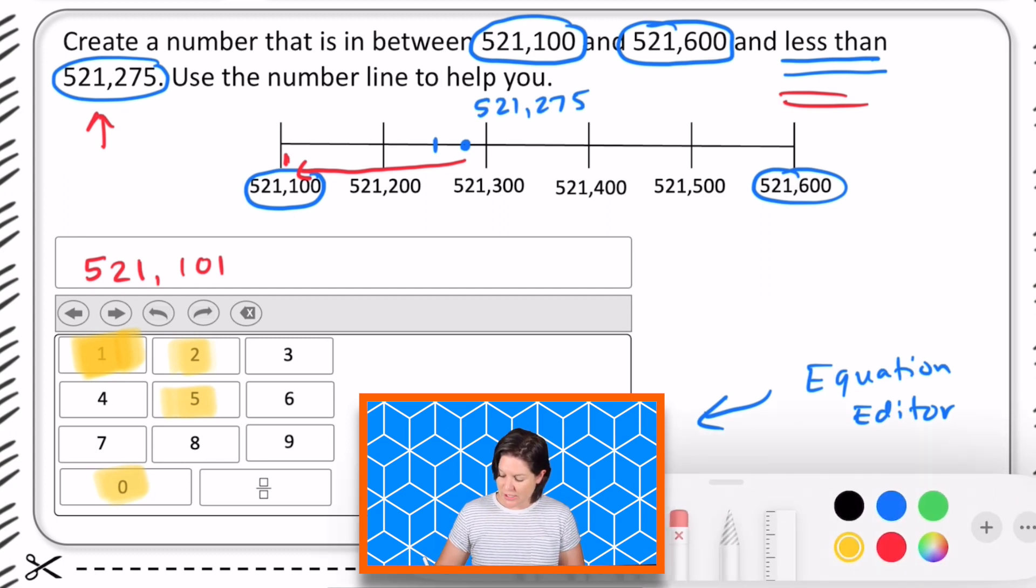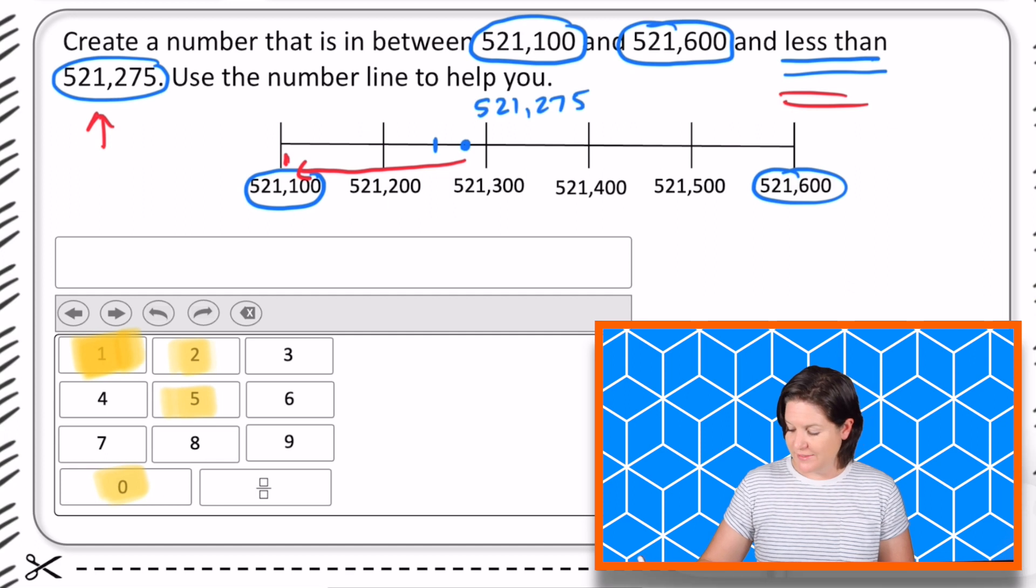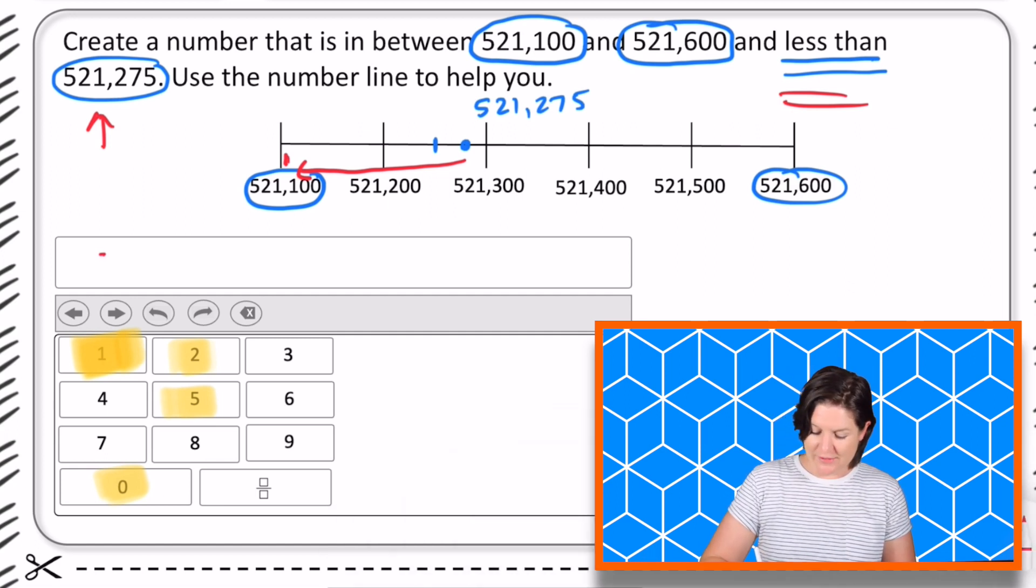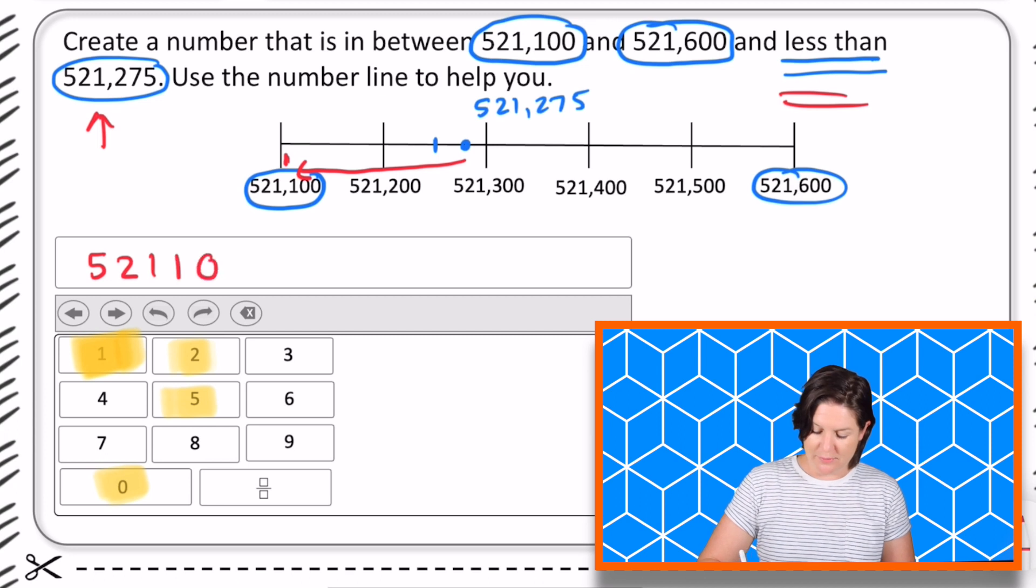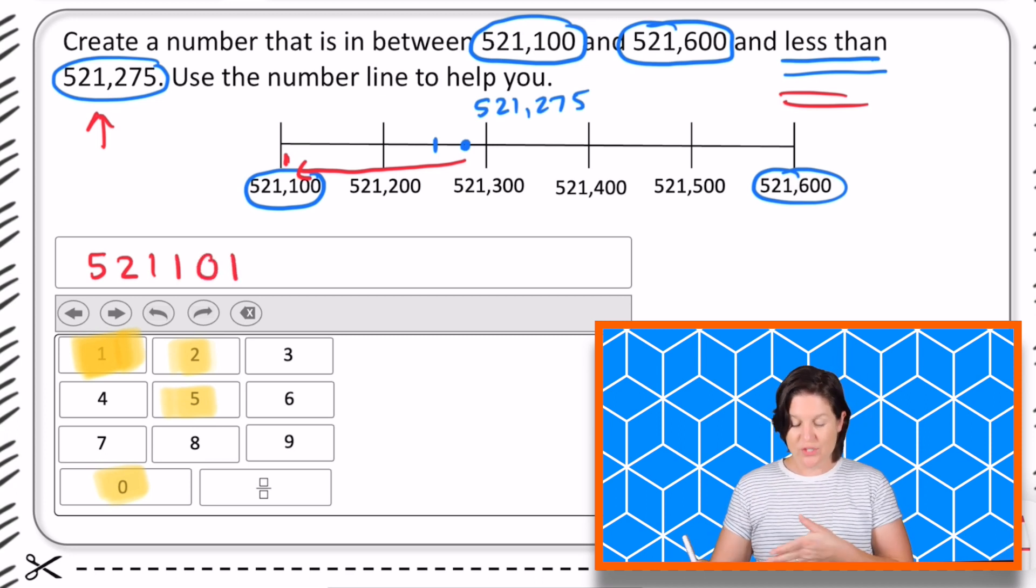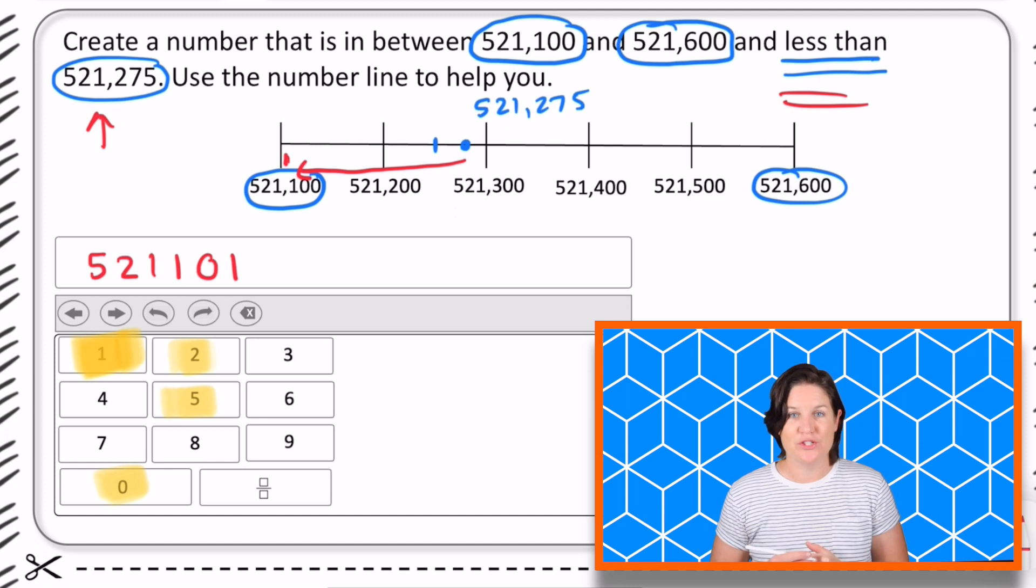So really I'm actually going to change this to just be, and this is hard for me as a teacher because I'm always stressing those commas, but it would be something like this, because as you can see, we don't have a comma in that equation editor.